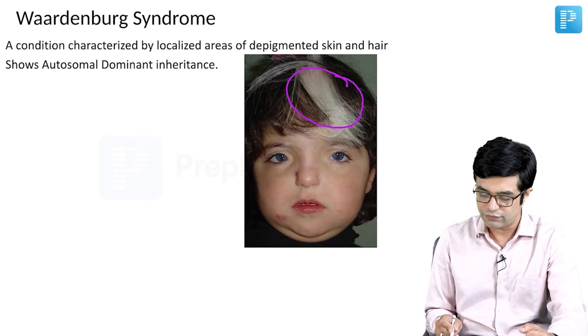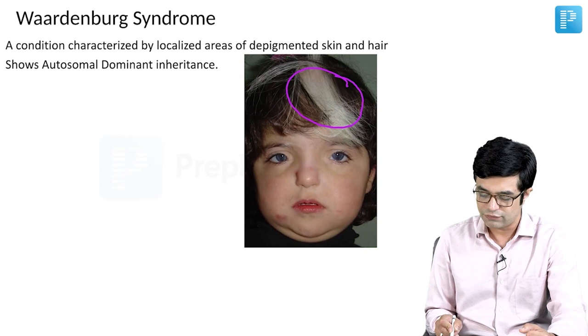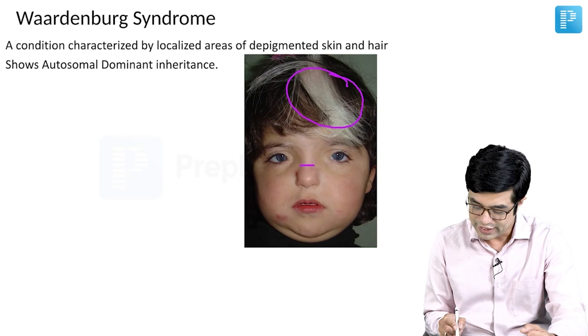If you look at this child, this child is having a classic white forelock. Additional findings include a broad nasal bridge and increased gap between the eyes.